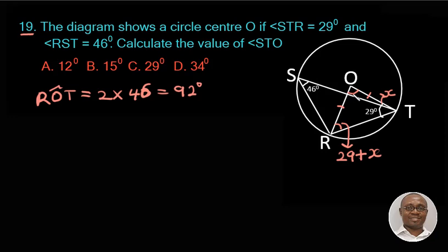So now that we have the angle at the center as 92°, this can help us to find the angle X. If we say the angle 92° plus the angle TRO which is 29° plus X, then plus the opposite angle, that is the angle on the other side of the triangle, the two base angles of the isosceles triangle, everything will be equal to 180° because the total sum of angles in a triangle is 180°.